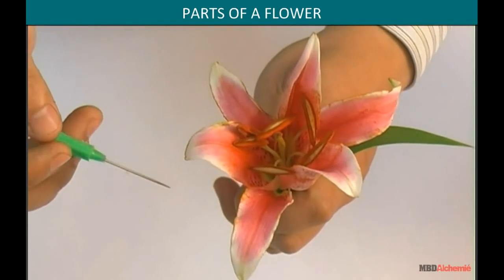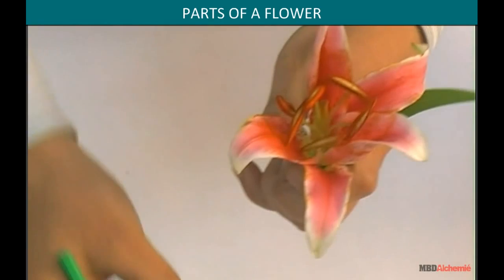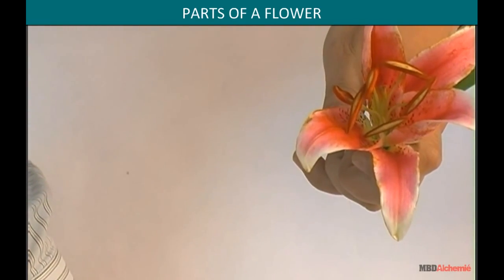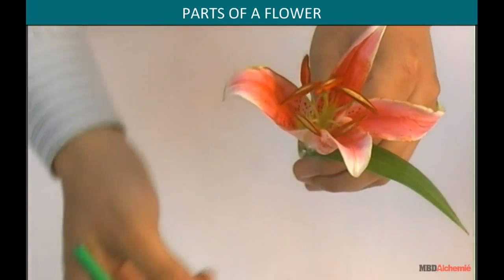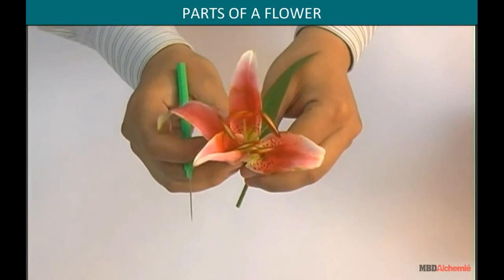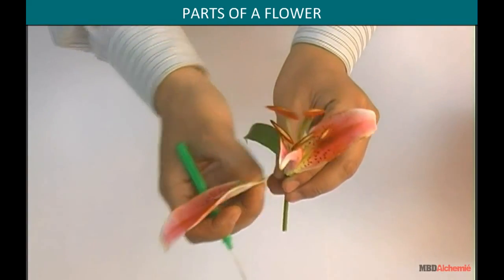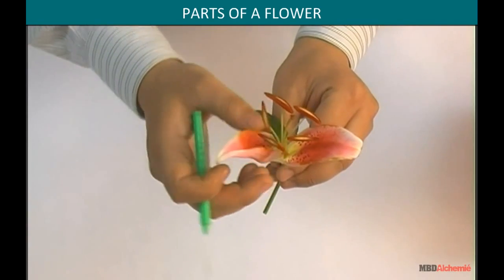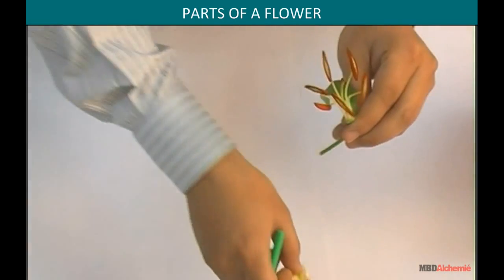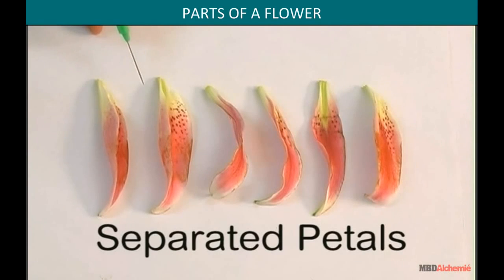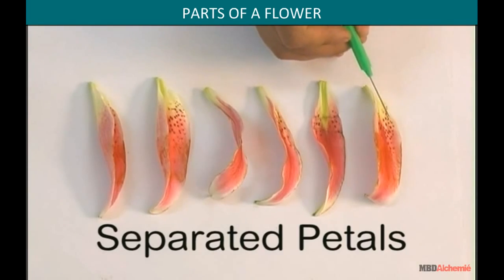Let us start the dissection by removing each of these petals — the first one, second, third, fourth, fifth, and the sixth. Here are the separated petals: first, second, third, fourth, fifth, and sixth.